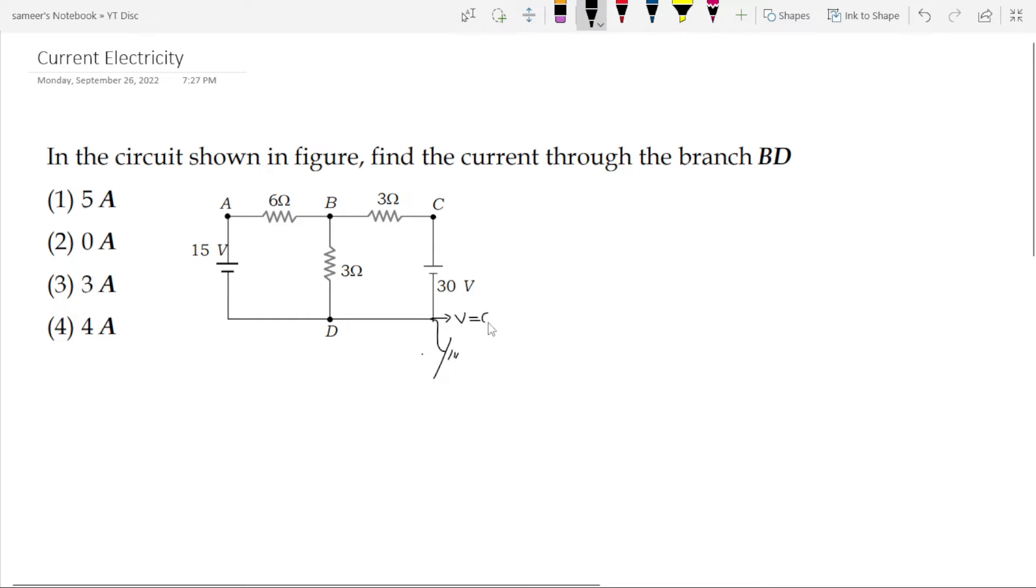When the potential of this point is 0, the potential of point C becomes plus 30 volts. As you move across the battery, the potential from negative terminal to positive terminal increases and also becomes 0.